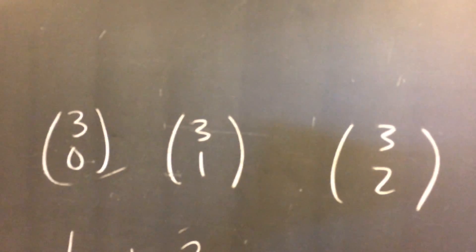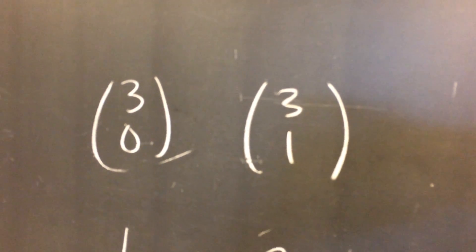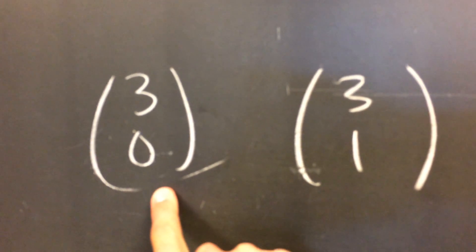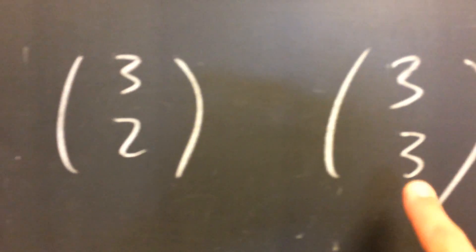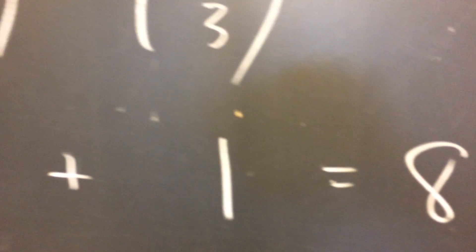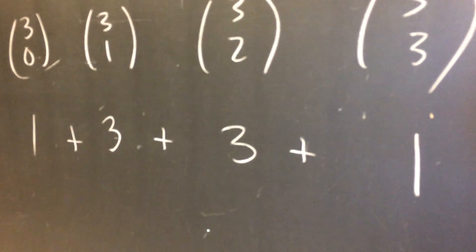Now thinking back to Pascal's Triangle for a second, remember the third row in Pascal's Triangle looked like this. This is how many ways can I choose zero items out of a group of three, one item, two items, three items. Well, those are all of the different cases that we're talking about. And so one plus three plus three plus one adds up to eight. That's two to the n, two to the three in this case.